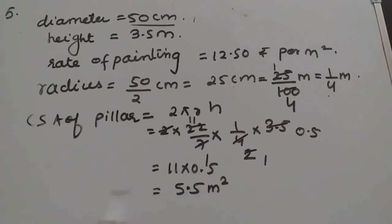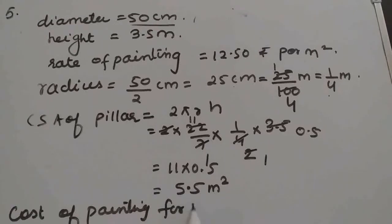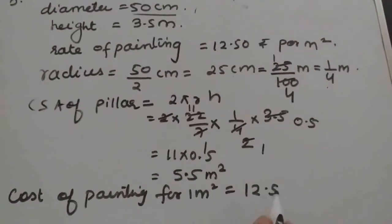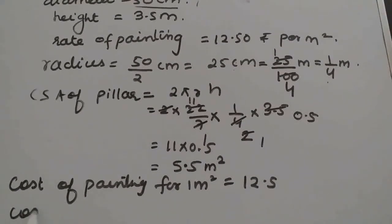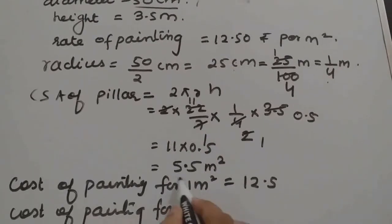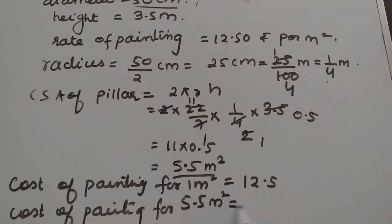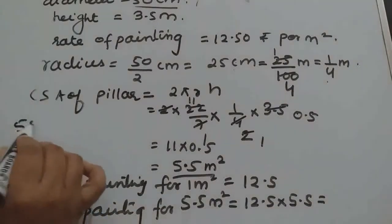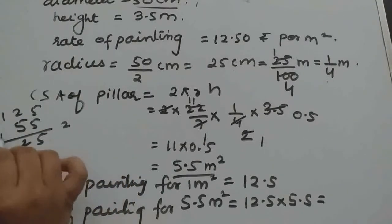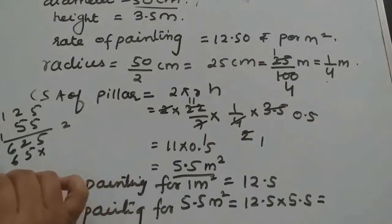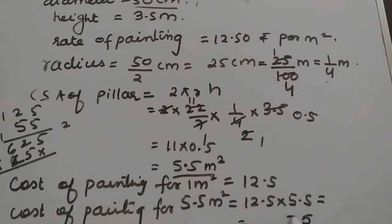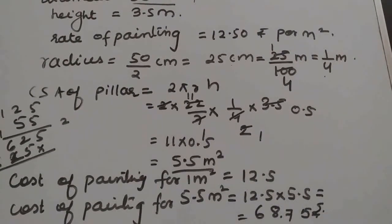Cost of painting for 1 meter square is 12.5 rupees. So cost of painting for 5.5 meter square: we multiply 5.5 by 12.5. That gives 55 multiplied by 125, which equals 6875. Placing the decimal gives 68.75 rupees as the cost of painting.